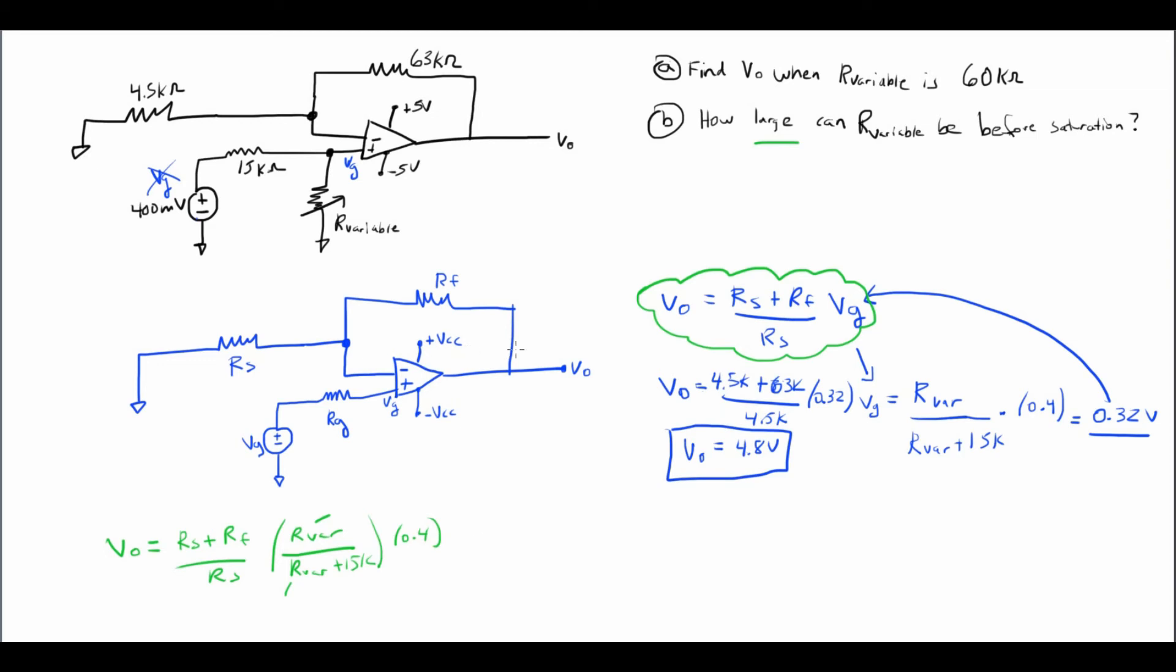So the answer ends up being at VO of 5 volts, which is positive saturation, RVAR ends up being 75 kilohms. So just for completeness, I'm going to show you what the value was for negative saturation. So at negative 5 volts, RVAR is going to be equal to negative 6.82 kilohms. And because we got two answers and we're looking for the largest answer, the answer is going to be 75 kilohms.